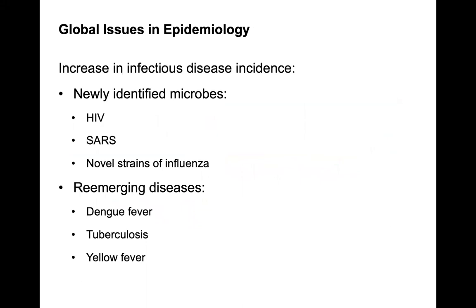To finish, global issues in epidemiology include increases in infectious disease incidence through newly identified microbes — HIV in the 1980s, SARS, and novel strains of flu. COVID-19 is a newly identified microbe, which is why it's called a novel virus. We also see re-emerging diseases such as TB, dengue fever, and yellow fever. You always get new and emerging things, but also old things that resurface. That is the end of chapter 13.